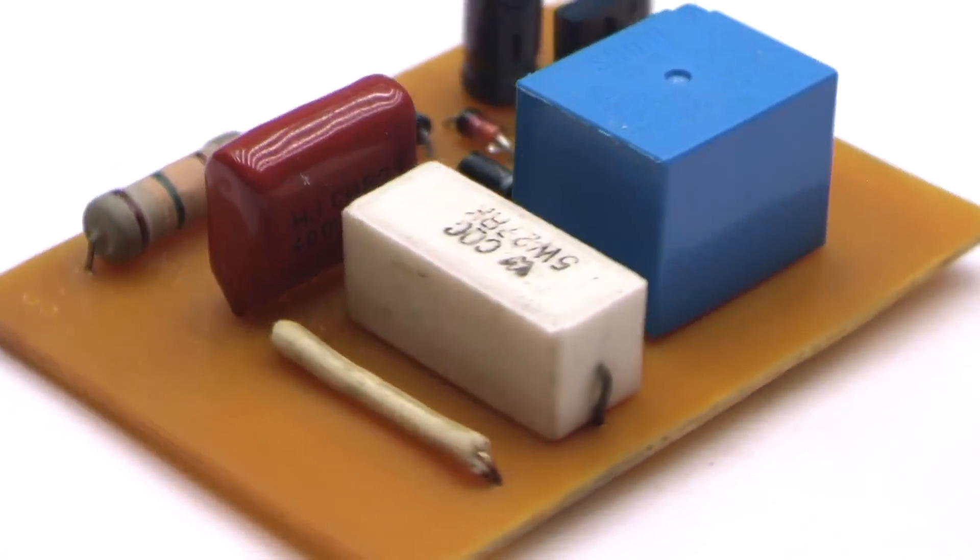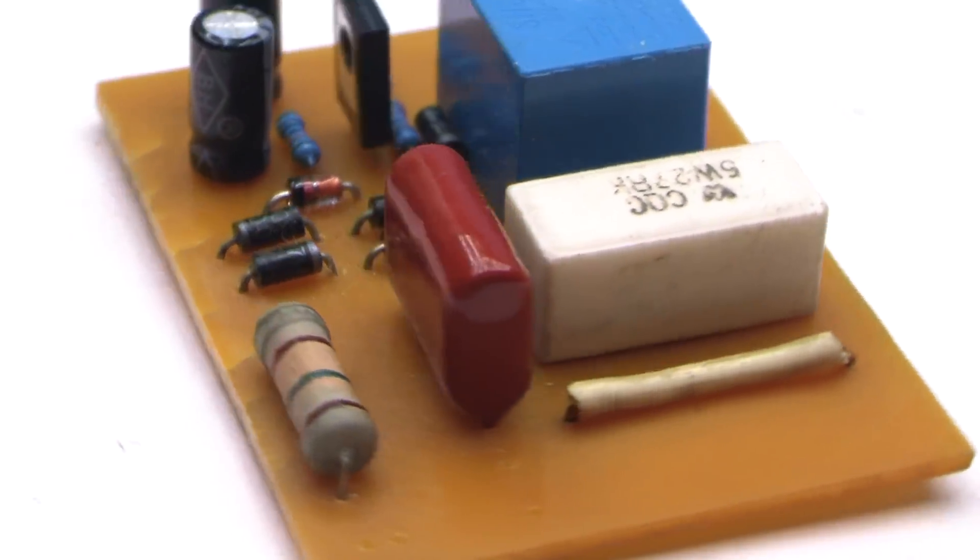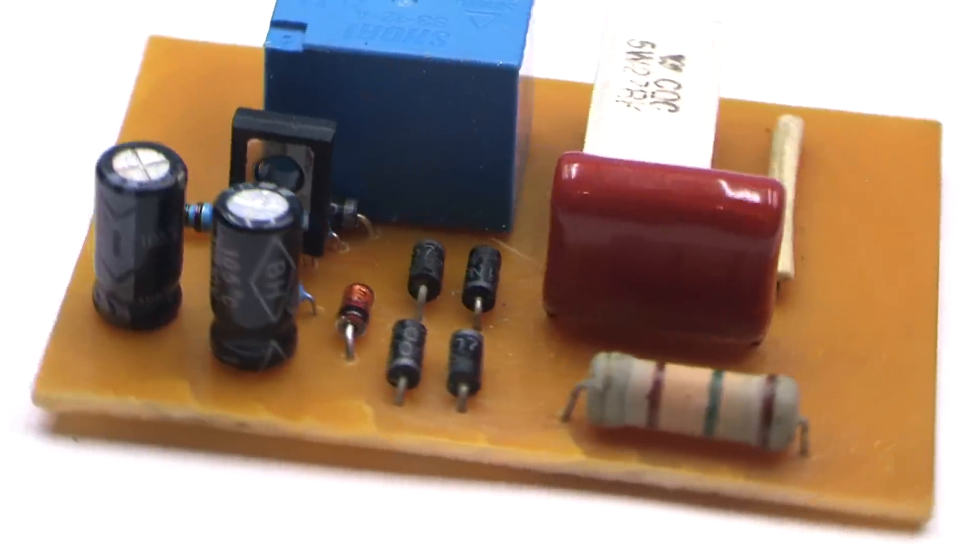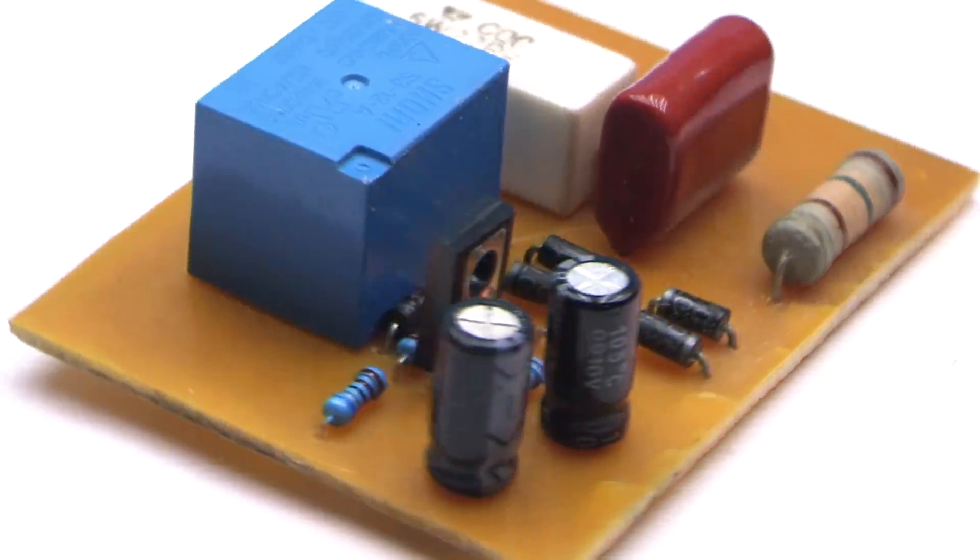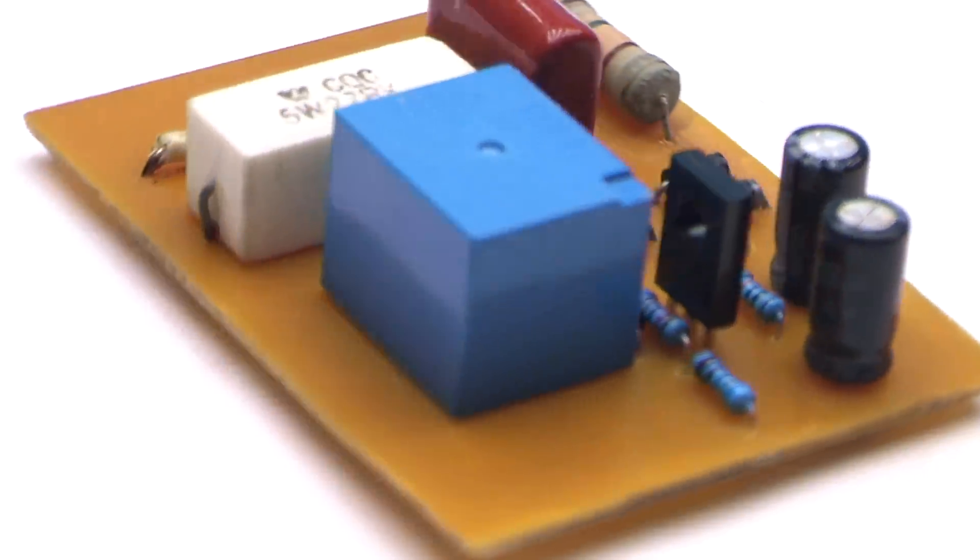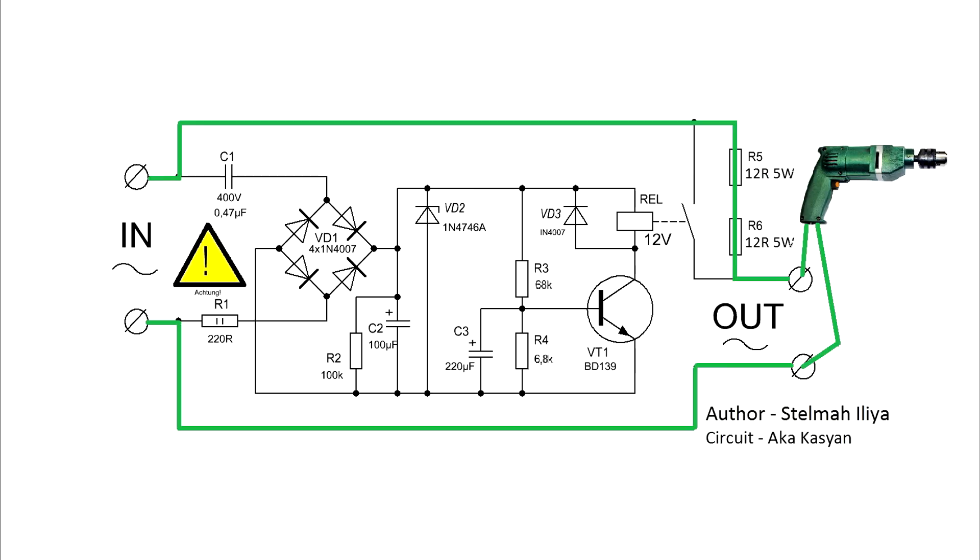At first I didn't want to go into the principle of the circuit, but there are people who are interested in this, so we will consider the process in more detail. As already mentioned, when the circuit is connected to the mains, the power is initially supplied to the load through the limiting resistors.